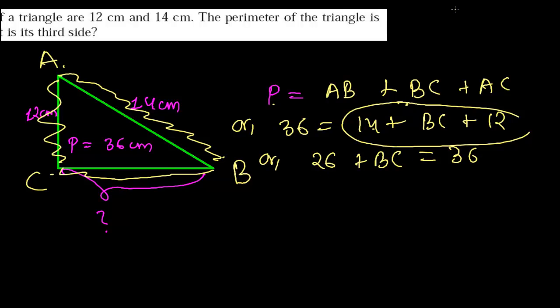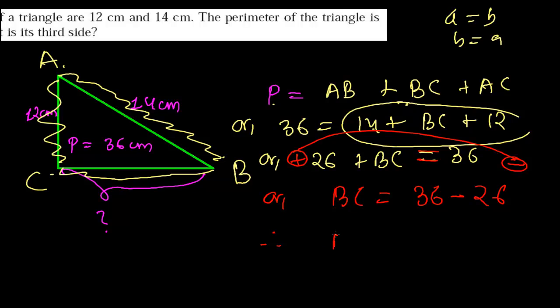Don't be confused because if A equals B, then B equals A. So in the next step, I can say that BC equals 36 minus 26, because 26 is in plus form. If it goes to the right side, then it will be in minus form. Therefore, the length of the third side is 36 minus 26, which is 10 centimeters.